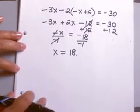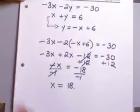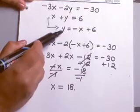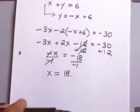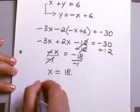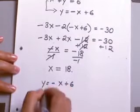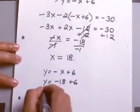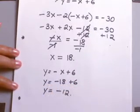Now that we have our x value, let's find y. Using the equation y equals negative x plus 6, and substituting x equals 18, we end up with negative 18 plus 6, and the y value equals negative 12.